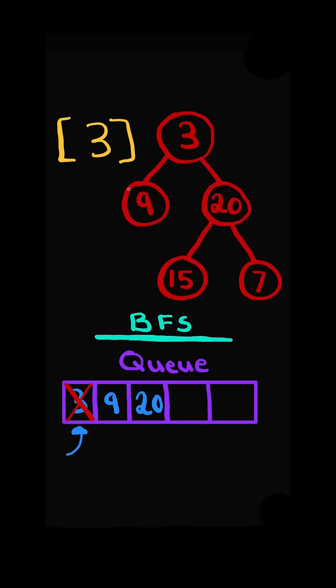Additionally, when we pop an element, we will add its children to the queue. Now we have two elements. We will pop nine and add it to a sublist. Nine does not have any children, so we do not need to add to our queue.